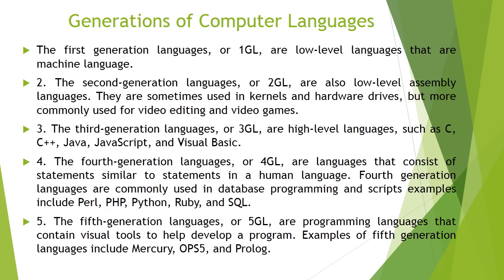The fourth generation languages, or 4GL, are languages that consist of statements similar to statements in a human language. That means in a 4GL, the languages are easier to learn and understand as they are similar to common English language. Examples are Perl, PHP, Python, Ruby and SQL. The fifth generation languages, or 5GL, are programming languages that contain visual tools to help develop a program. Examples include Mercury, OPS5 and Prolog.